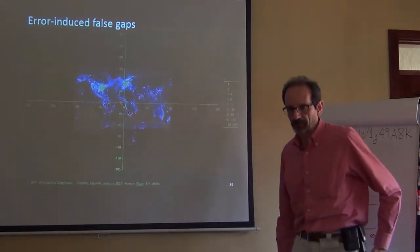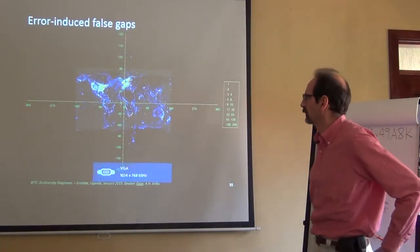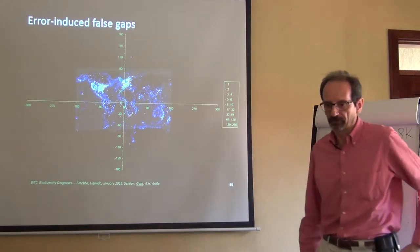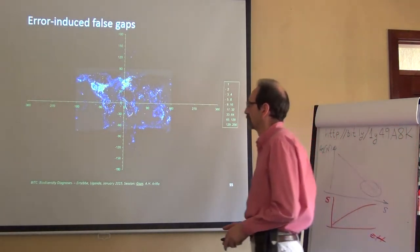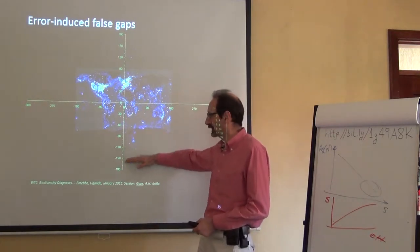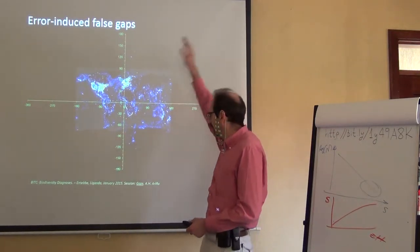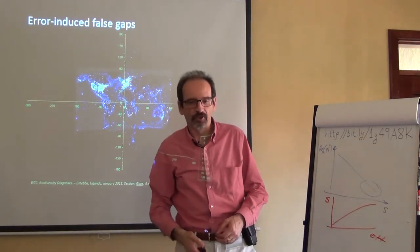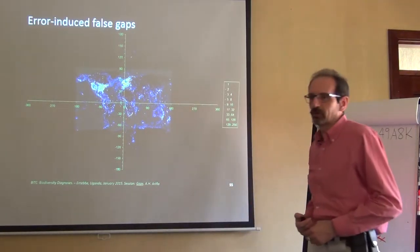This type of gap is what we call error-induced gaps. Suppose that we take a dirty dataset such as this one, and you can tell it's dirty because it has coordinates outside of the world. They are coordinates in Earth orbit or whatever, so we know it's wrong.